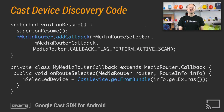Here's an example of how to add a callback to the MediaRouter to start device discovery. The device the user has selected is extracted from the callback data.